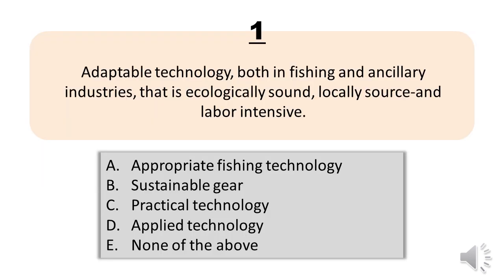Number 1. Adaptable technology, both in fishing and ancillary industries, that is ecologically sound, locally sourced and labor-intensive. A. Appropriate fishing technology. B. Sustainable gear. C. Practical technology. D. Applied technology. E. None of the above. The correct answer is Letter A. Appropriate fishing technology.